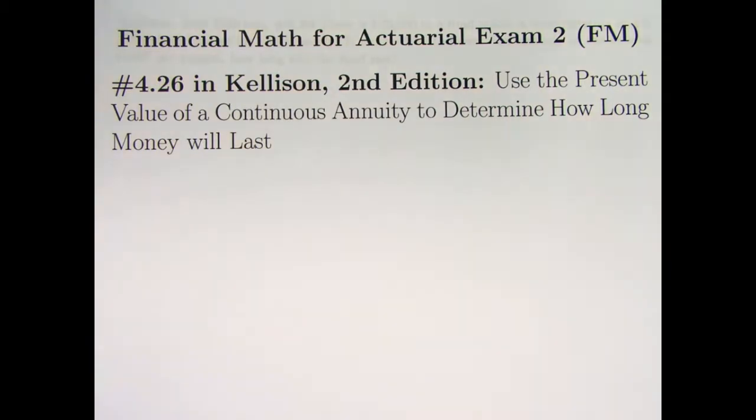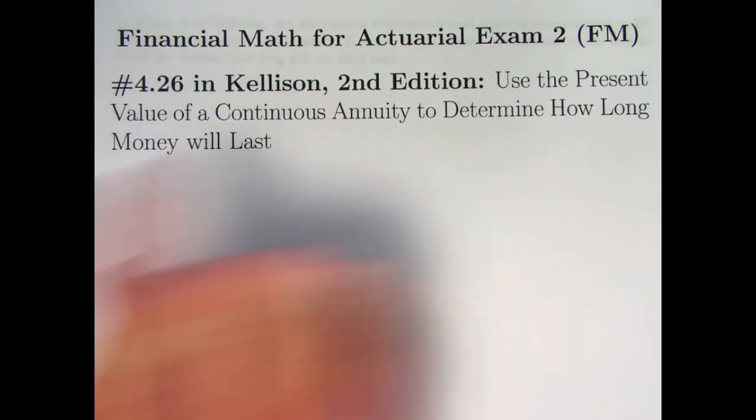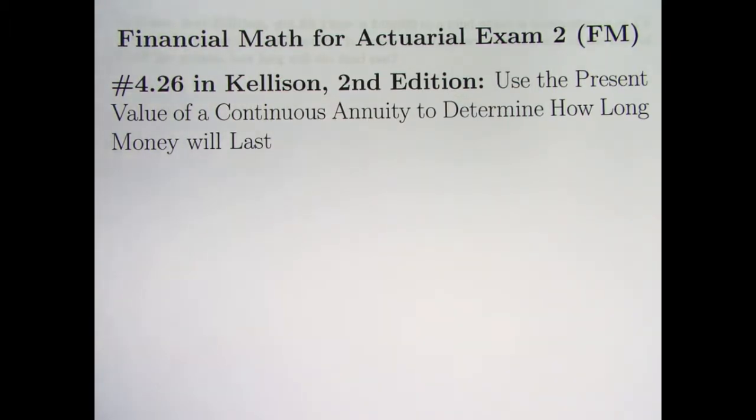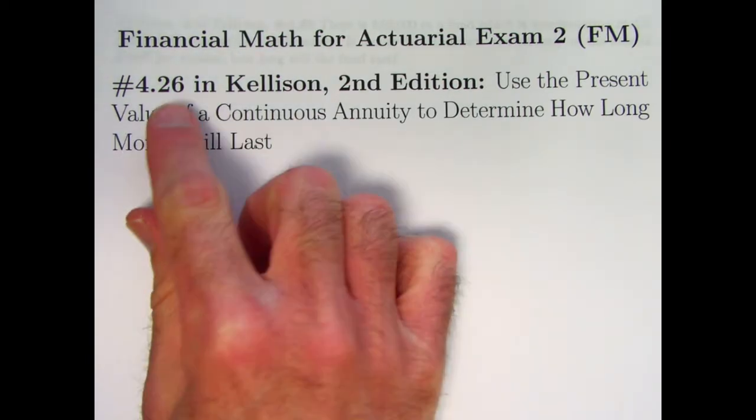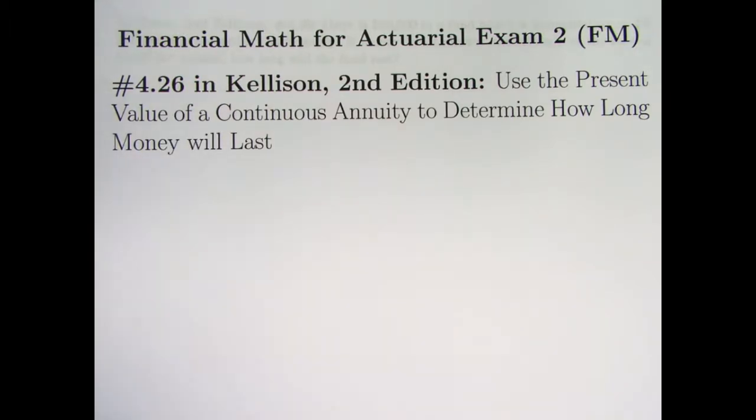The reason being that I was in Broverman in section 2.2. They do get into the idea of a continuous annuity, but the problem selection at the end of chapter 2 related to continuous annuities seemed pretty sparse, and the few problems related to it were pretty hard. I wanted something more basic, so I found Kellison's book and looked at this problem as what I wanted to start with as an example of a continuous annuity. We're going to use the present value of a continuous annuity in this problem to determine how long money will last.